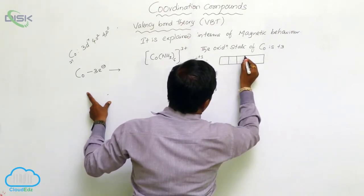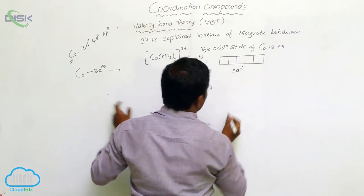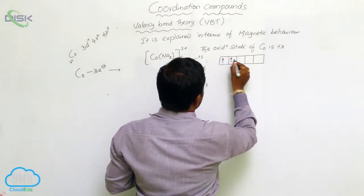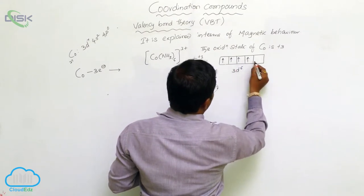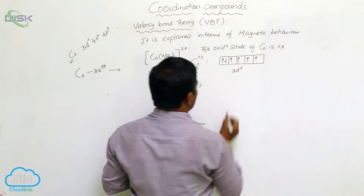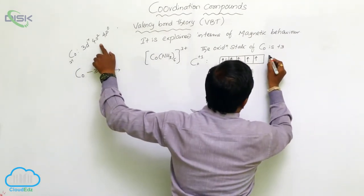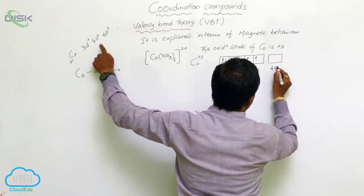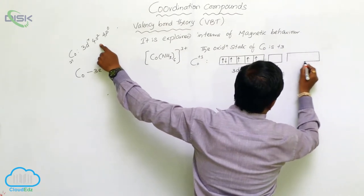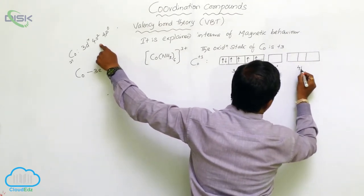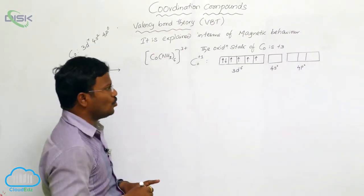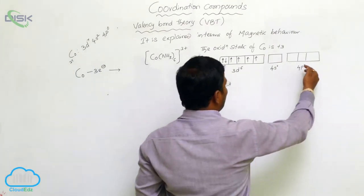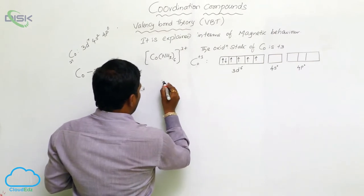The resulting electron configuration for Co³⁺ shows the 3d orbital with six electrons — represented as three pairs filling five sub-orbitals up to the third, while the 4s orbital is empty and the 4p orbital is also empty, with no electrons present in either.